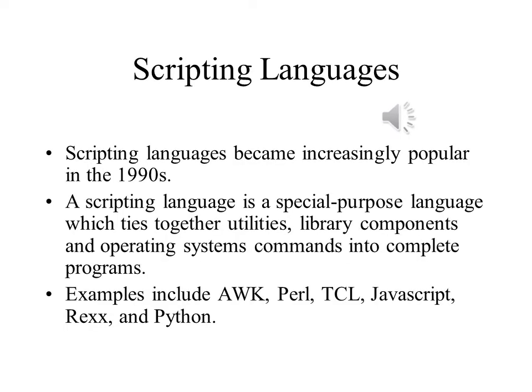Scripting languages are little languages that are designed for writing small, special-purpose programs called scripts. The concept has been around for quite some time. AWK, a small language designed for text processing, is just one example of a scripting language. They have the advantage of having utilities and library components designed especially for the tasks they are intended for, and many also include operating system commands to facilitate their tasks. Modern scripting languages include Perl, TCL, JavaScript, Rex, and Python.